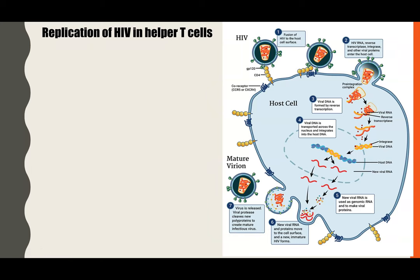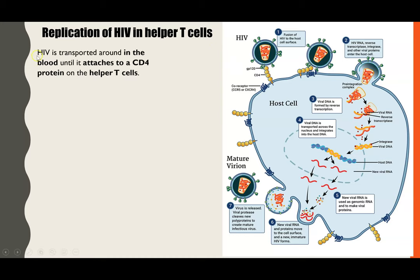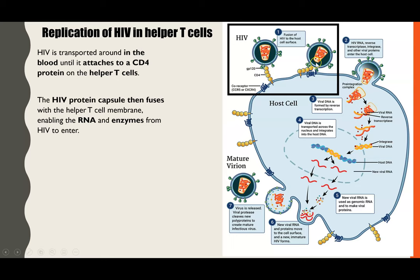Next, we look at how HIV replicates inside its host. Thinking of the human as the host, the first thing that happens is that HIV particles are transported around in the blood. Within the blood you also have helper T cells — a type of white blood cell — and the protein attachment on the HIV cell is able to attach to what we call the CD4 protein on a helper T cell. Once attached, the membrane from the HIV fuses with the membrane of the helper T cell, and the reverse transcriptase and the RNA are released into that helper T cell.